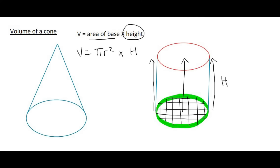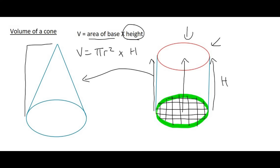But that's a cylinder. In this video, we're talking about a cone, but they do have a similarity. Would you say that you could put more water in the cylinder, or could you put more water in the cone, if their radius and their height is the same? Well, it's obvious that you would be able to fit more water in the cylinder, because all of this part over here has been taken away when you're looking at a cone.